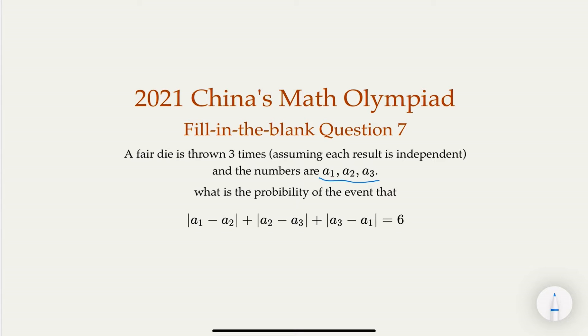Of course, the numbers on the six sides would be one to six. Assuming they're fair, which means each side is equal opportunity, and assuming that each throw is independent with each other. So here the question is, with these three outcomes A1, A2, A3, what is the probability for the event that the absolute value of the differences, the mutual differences, is equal to six?